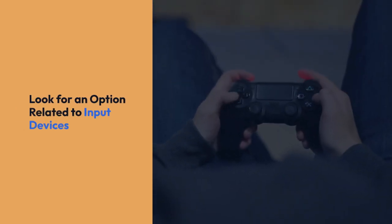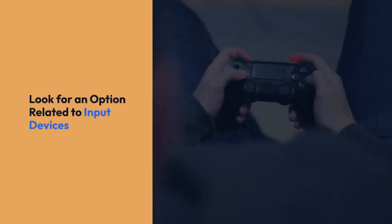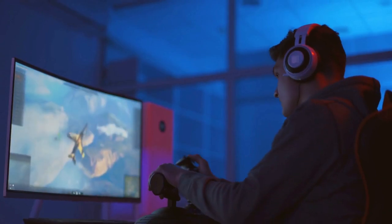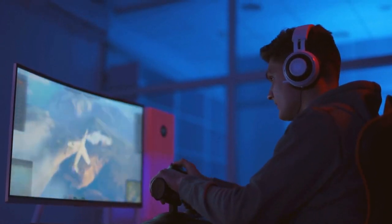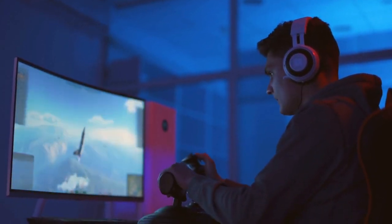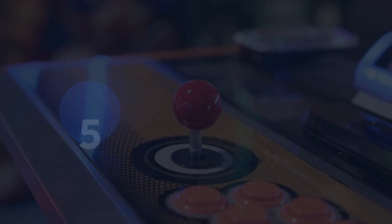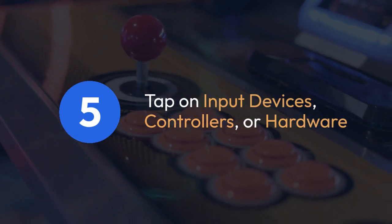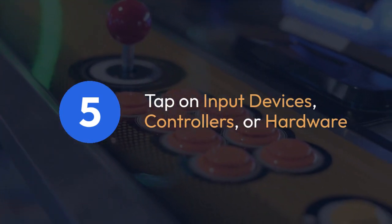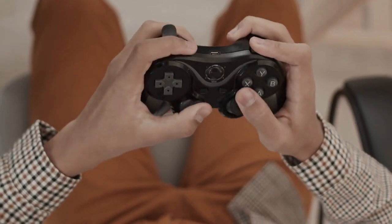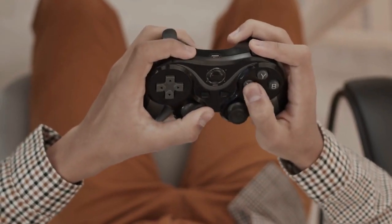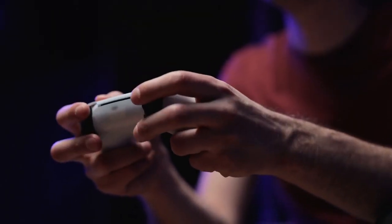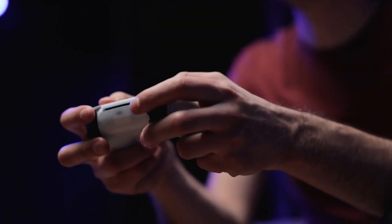Within the Controls section, look for an option related to input devices. This might be named something like Input Devices, Controllers, or Hardware. Tap on it. You should now see a list of available input methods such as touchscreen, keyboard, and potentially other gamepads.